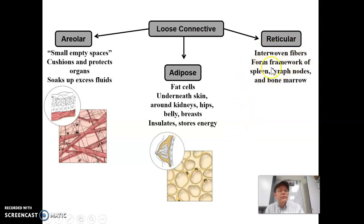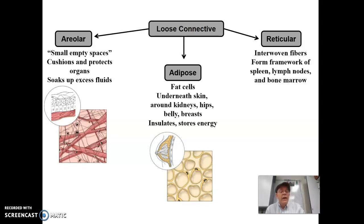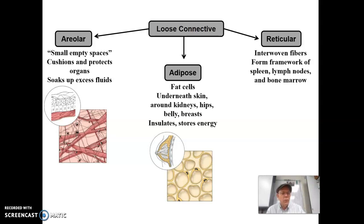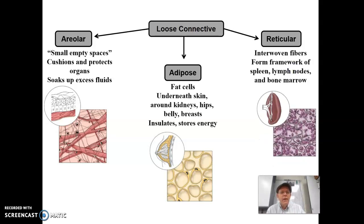Your lymph nodes, which you have in your throat, in your armpit, and scattered all over your body — with a particularly high concentration in the groin area — are made of reticular loose connective tissue. And your bone marrow: if you've ever cracked open a chicken bone, you see that reddish tissue in the middle — that is the bone marrow, and it is even more squishy. You have some fibers that make a framework, with lots of cells on them, just enough to make the framework of the organ.